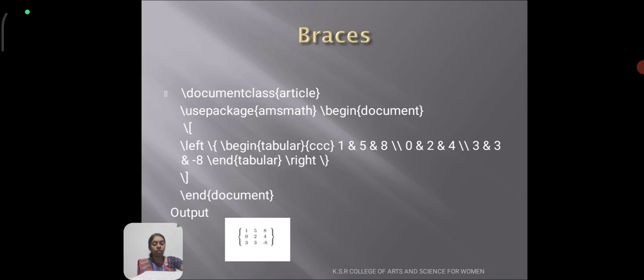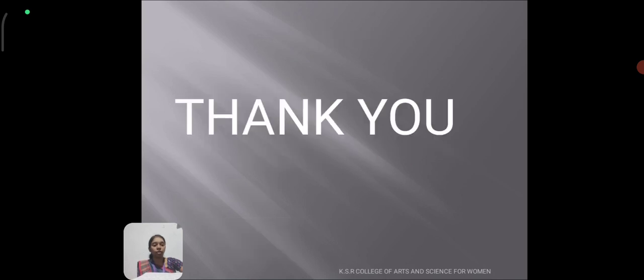Next one is braces. The curly braces have special meaning. The commands \left and \right will automatically choose the braces and appropriate size. For example: \documentclass{article}, \usepackage, \begin{document}, and \left\{ \begin{tabular}{ccc}: 1 & 5 & 8 \\ 0 & 2 & 4 \\ 3 & 3 & -8. The output becomes 1 5 8 in array format. Thank you.